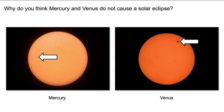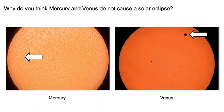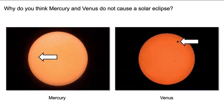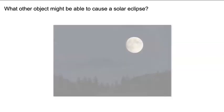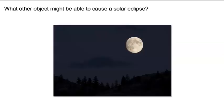Why do you think Mercury and Venus do not cause a solar eclipse? Do you think these planets are too small to cause a solar eclipse? Or maybe you think that these planets are too far away from Earth to cause a solar eclipse. What other object might be able to cause a solar eclipse? Do you think the moon could cause a solar eclipse?